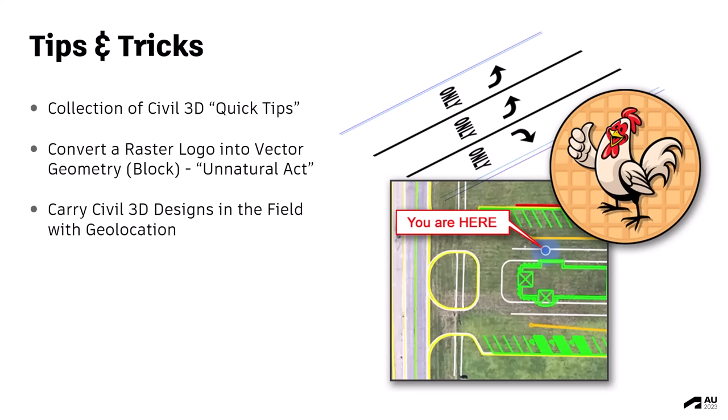These are the type of workflows that you can accomplish in a minute or two. Next, I will show you a way that you can convert raster imagery into vector geometry — think company logos. I will also show you a way that you can carry Civil 3D designs into the field using a smartphone or tablet, such that you can walk around the site and know where you are geospatially within your design.